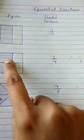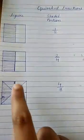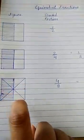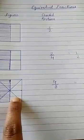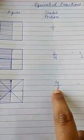2 by 4, total 4 portions and two of them are shaded, and here 4 by 8, from which 4 is shaded and 4 is unshaded. So, total eight parts and 4 is shaded.